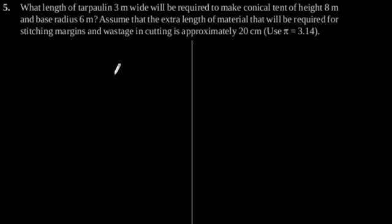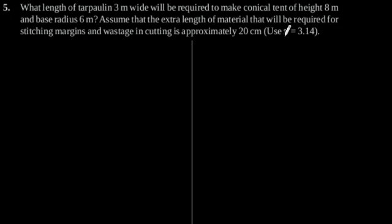Exercise 13.3, Question number 5. What length of tarpaulin 3 meter wide will be required to make a conical tent of height 8 meter and base radius 6 meter? Assume that the extra length of material required for stitching margins and wastage in cutting is approximately 20 centimeter.